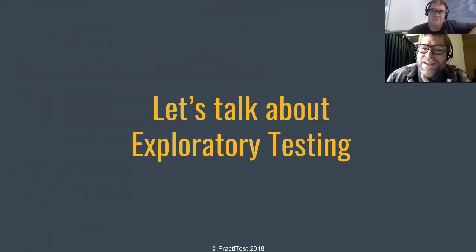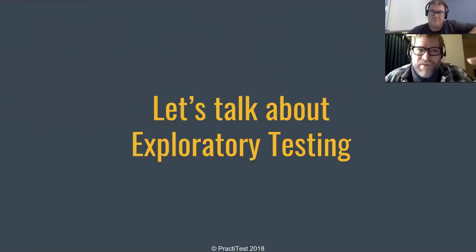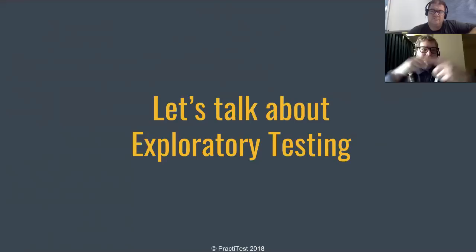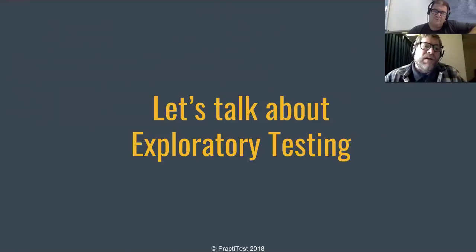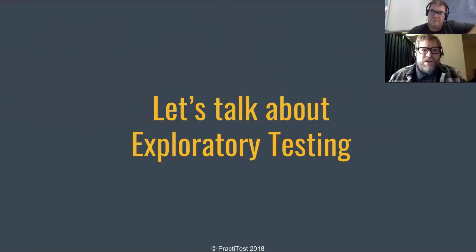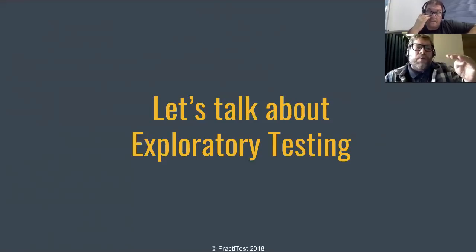That doesn't mean I've tested everything well enough — it means I've gotten to a particular level. If it's really important, like a medical device, I don't stop there. At that point I bring in other people, have a brainstorming session, use pairing, talk to the developer, read the code — lots of different methods. But that's only for very important things. You have to decide: is this thing so important that you need 17 different methods to ensure you've done enough? Maybe you've done enough for now because you have other things to test. On an agile project, that's the more likely situation. You want to be able to say: 'Have I done the testing that a reasonable person would have done?'